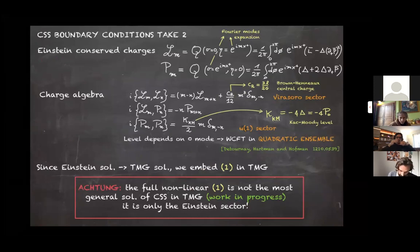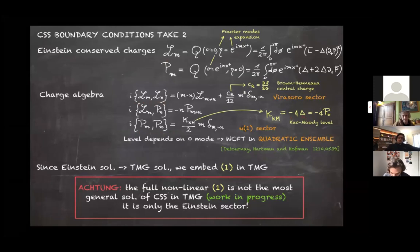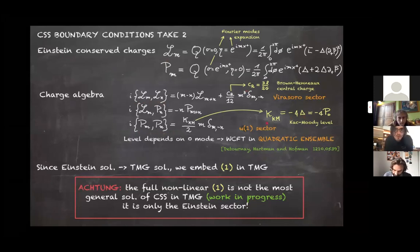One can show that the charge algebra is a semi-direct product of a Virasoro sector with a U(1) Kac-Moody sector, where the Kac-Moody level is −4 times delta — the constant appearing in the g−− component of the metric. The Virasoro central charge is the famous Brown-Henneaux central charge.